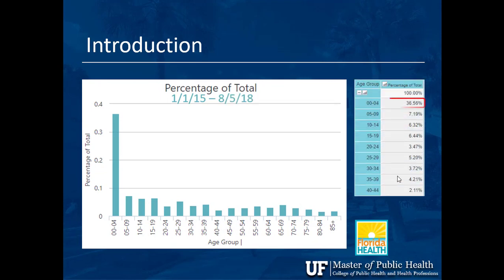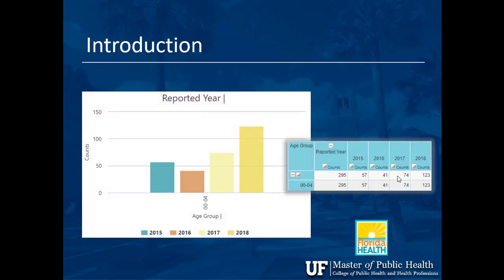Looking at the data by age group, the ages zero to four hold the greatest share — over 36% of all infections for that time period. And focusing just on zero to four across 2015 to 2018, the number more than doubled from 57 to 123 cases.